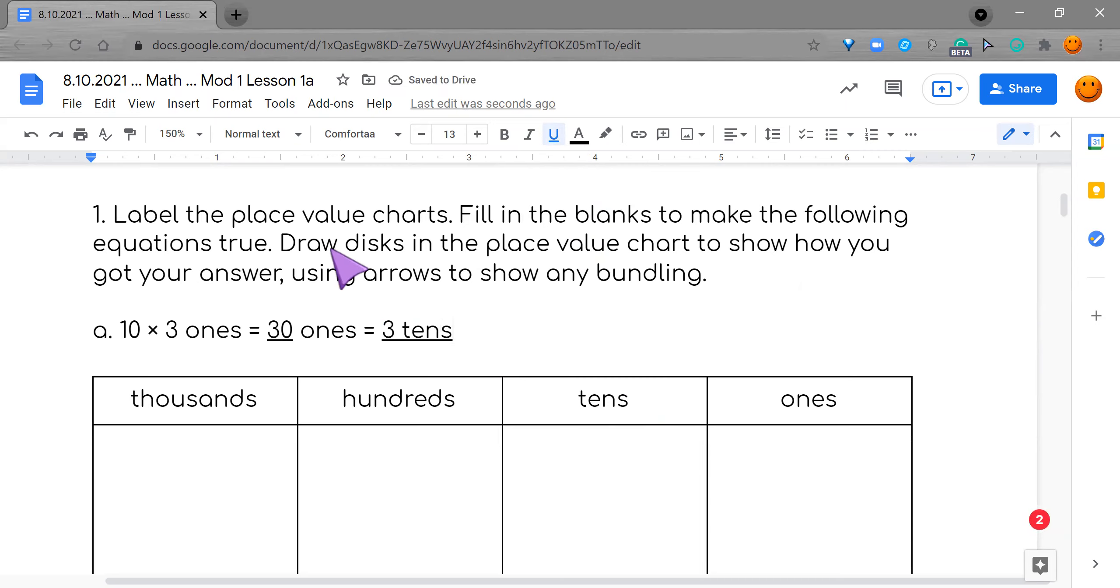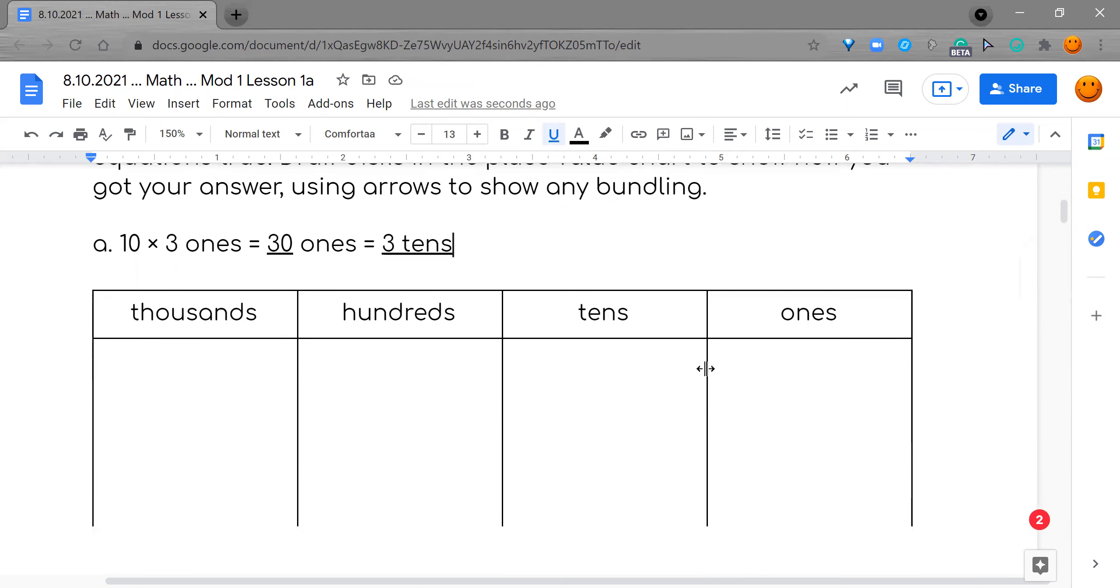So now it's saying draw a disk or draw something in the place value chart. Show how you got your answer. So this is what I'm going to do. I'm going to do tally marks. And all I'm going to do is use a little L. So one, two, three, four, five, six, seven, eight, nine, ten.